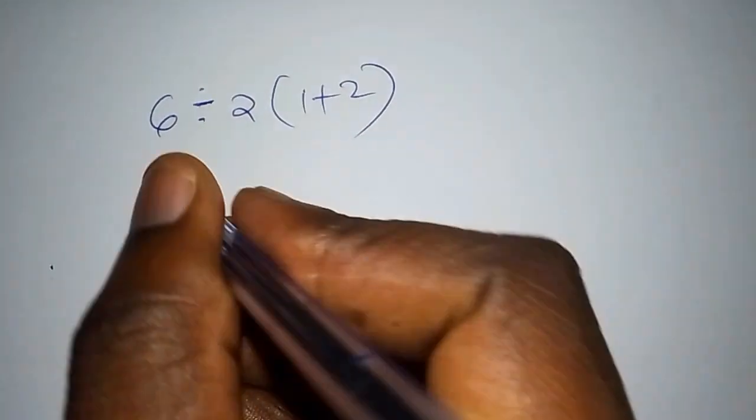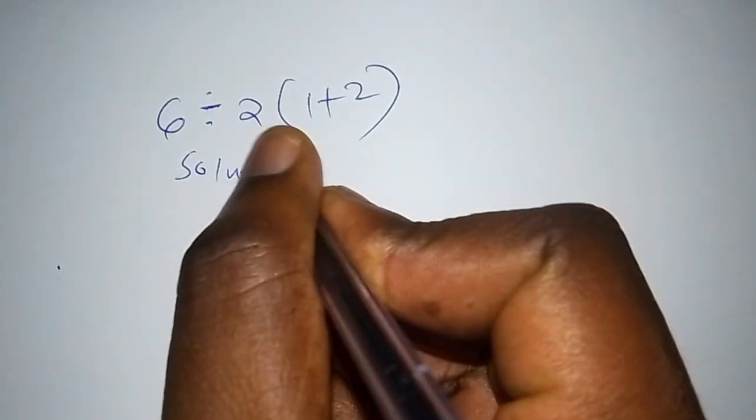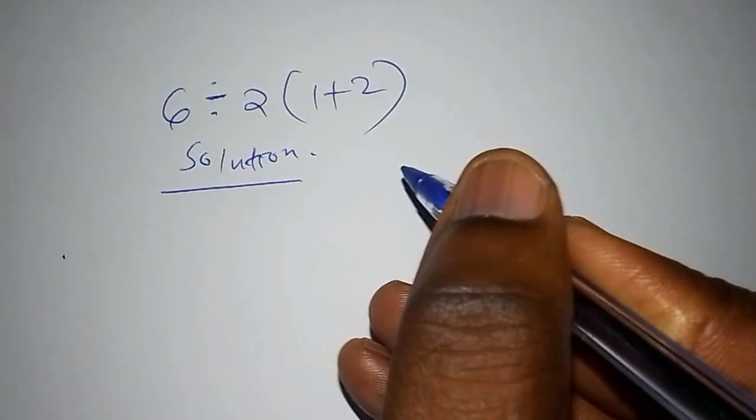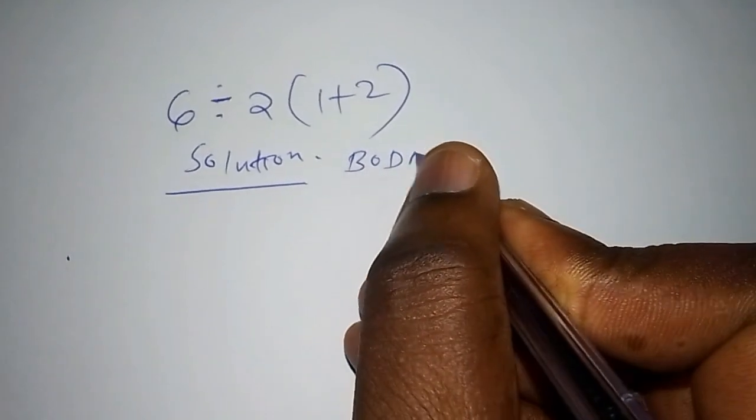So the first thing that you are going to do, we are going to start with solution. So under solution, there is one simpler way that you can work it out very fast. It is by the use of what is called BODMAS.